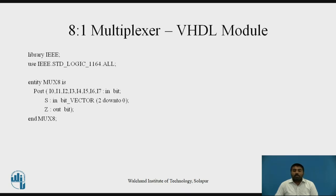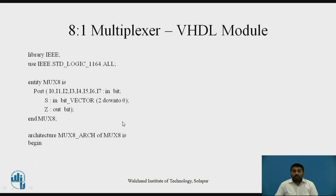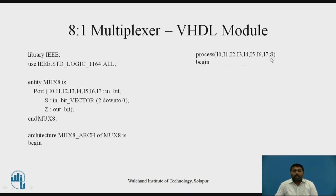The third part of the VHDL module is the architecture. The architecture name is written along with the entity name it belongs to — here both are MUX. Then architecture begin. The architecture gives the functionality describing how the 8-to-1 MUX is going to behave. For that, we have written a process. Inside the process, there is a sensitivity list — signals that affect the output, including i0, i1, and all input signals and the select line S.